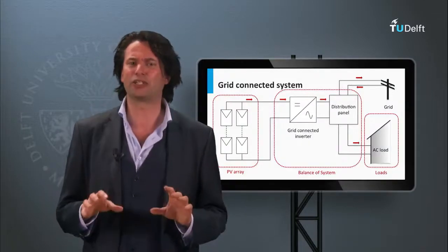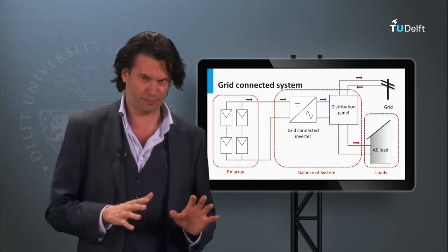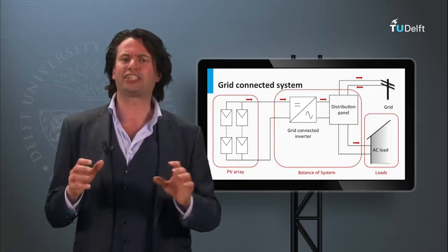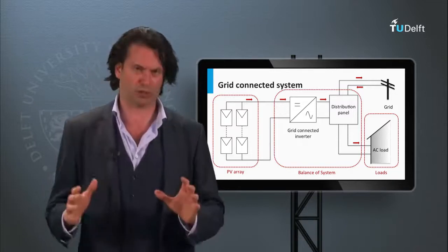As the name suggests, the grid-connected PV system is connected to the electric grid. There is a continuous exchange of power with the electric grid via the distribution panel.